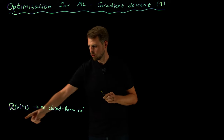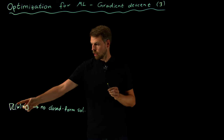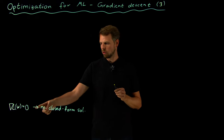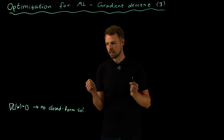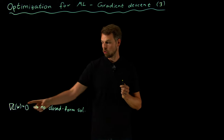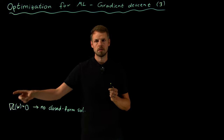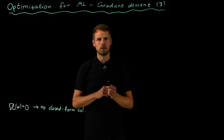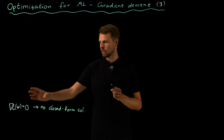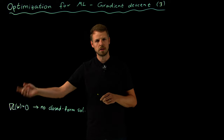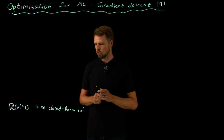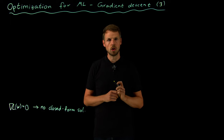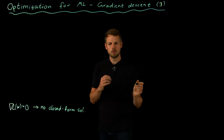Our situation is that the gradient of our loss function should be zero as a necessary condition for optimality. But it's not possible to solve this system of equations in closed form. For linear regression, we get a solution using the pseudo-inverse, but for nonlinear systems, we cannot.